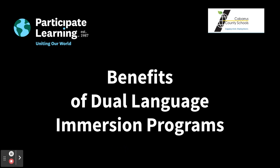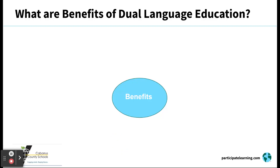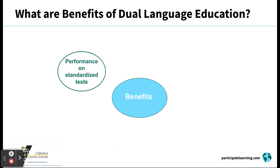The benefits of dual language immersion programs. There are many benefits of a dual language education. The first is performance on standardized tests. All groups of dual language students tend to score higher, including students from a range of socioeconomic and ethnic backgrounds, as well as with diverse cognitive and linguistic abilities. Students educated via dual language typically outperform students in traditional classes on a variety of English language tests, including reading, writing, and listening. Students educated via dual language achieve the same or higher levels of competence in academic subjects, including math, science, and social studies.